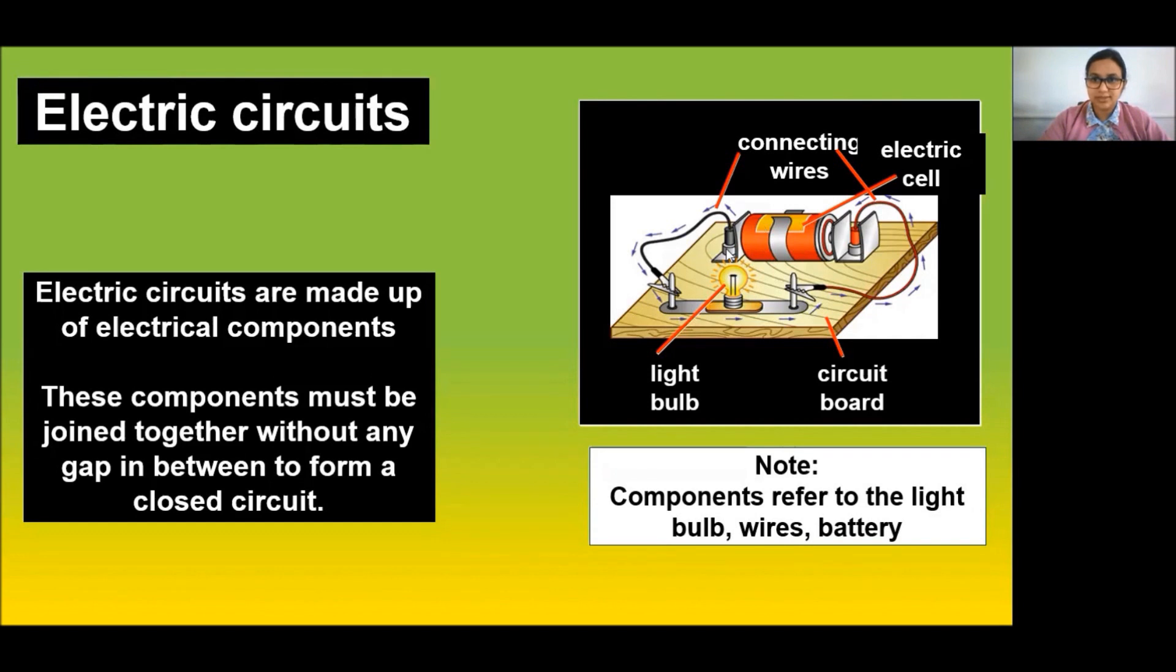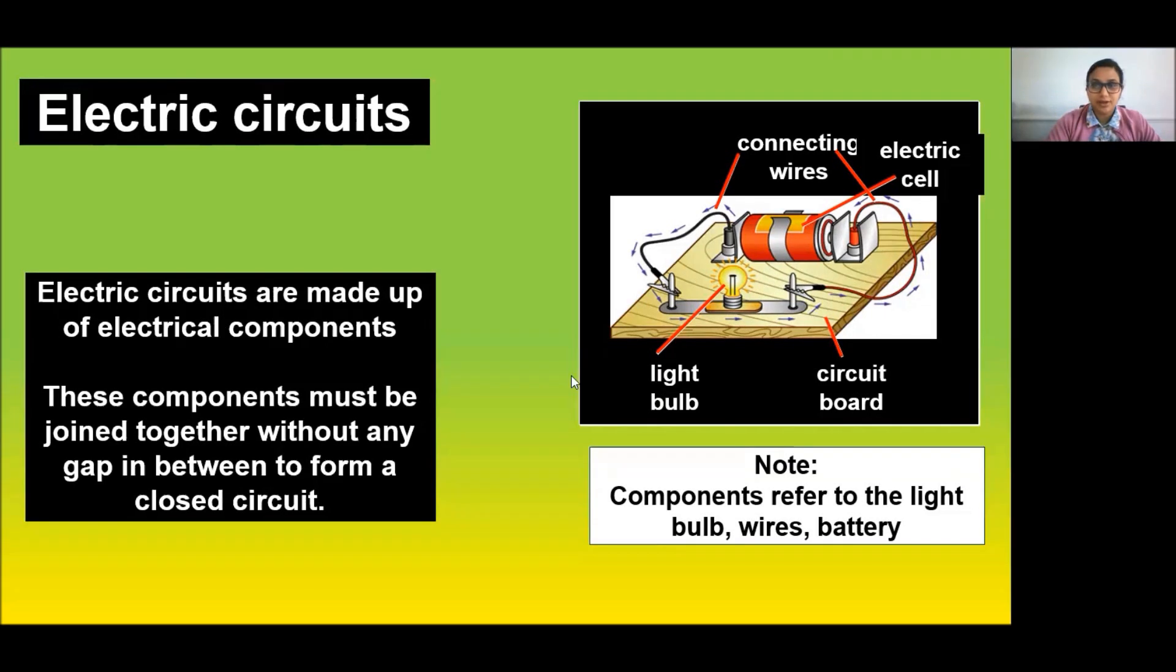As you can see here, this circuit consists of connecting wires, a light bulb, a circuit board, and a cell. These components must be joined together without any gap in between to form a closed circuit. A continuous closed path of an electric current is called an electric circuit.